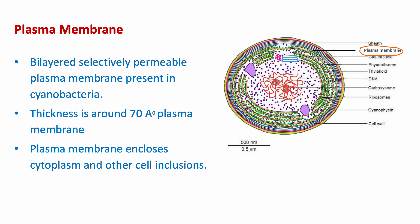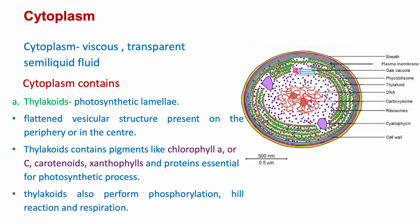Plasma membrane: a bilayered, selectively permeable plasma membrane is present in cyanobacteria. A selectively permeable membrane means it allows only some substances and molecules to pass into or leave the cell. The thickness of the plasma membrane is around 70 angstroms. It encloses the cytoplasm and other cell inclusions.